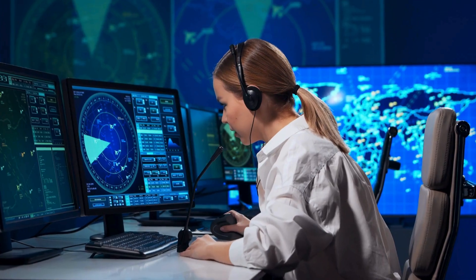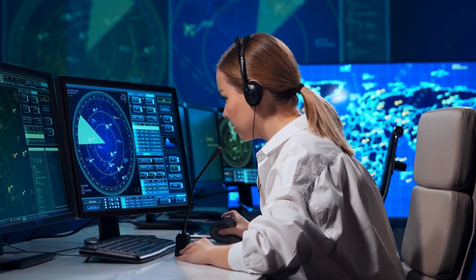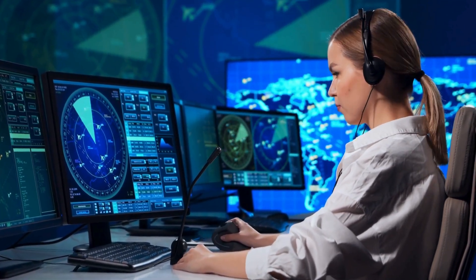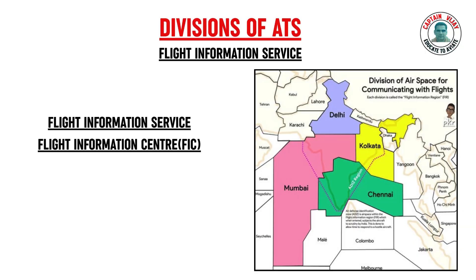The air traffic service units providing flight information service are called flight information centers. Generally, flight information centers are co-located along with each FIR. In India, we have four FIRs named Delhi, Mumbai, Kolkata, and Chennai FIR, with FIR boundaries as shown on the screen. Each FIR provides flight information service through its co-located flight information center. Flights receive information such as weather, airport availability, availability of nav aids, and so on.